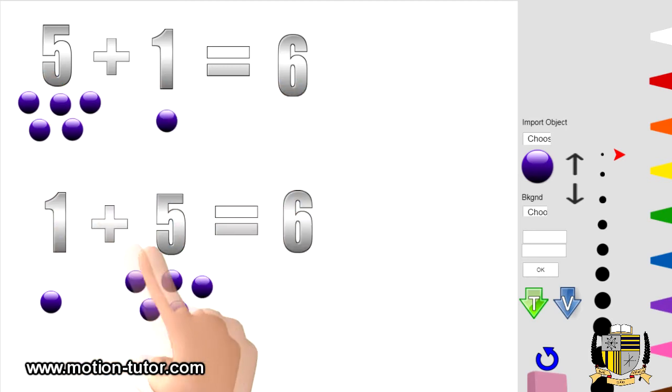Now let's flip around the five and one. Here's one: one. Here's a five: one, two, three, four, five. And together, one, two, three, four, five, six.